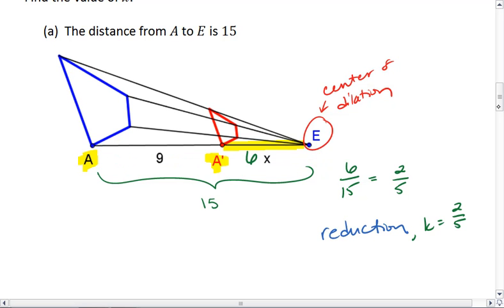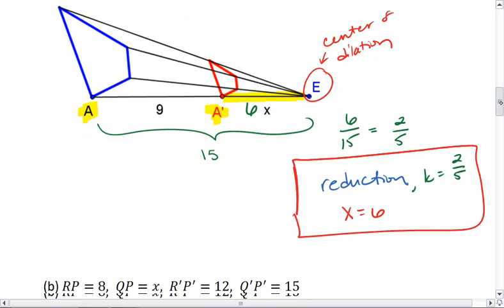And then lastly we wanted to find the value of X which we already did. X equals 6. There's our three parts. It's a reduction. Our scale factor is 2/5 and X is 6.